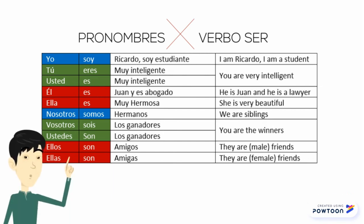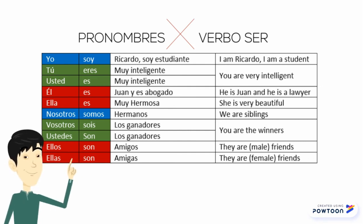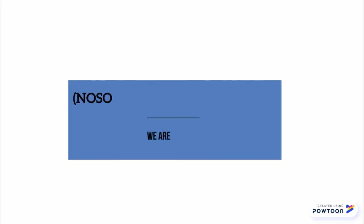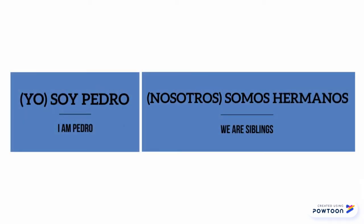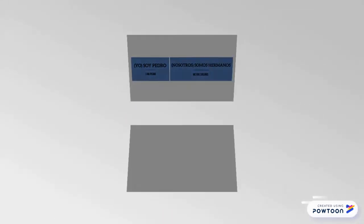In Spanish conjugation, the verb changes depending on each pronoun. Therefore, it's not mandatory to use the pronouns when speaking, since they are deducible from the conjugation itself. So, soy Pedro is the same as yo soy Pedro, and somos hermanos is the same as nosotros somos hermanos. In fact, in those cases, we resort to the pronouns only in order to emphasize what we want to say. Otherwise, we can easily omit them.